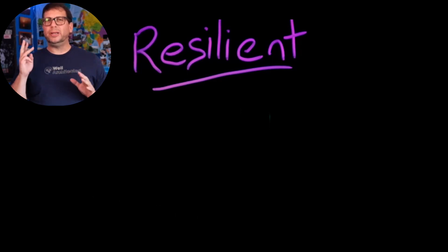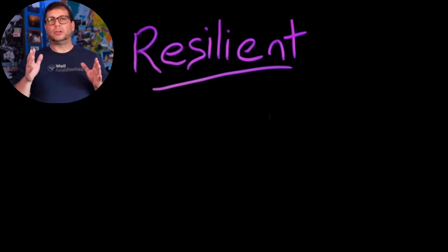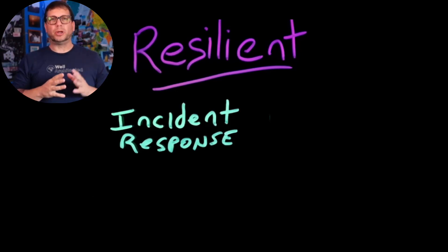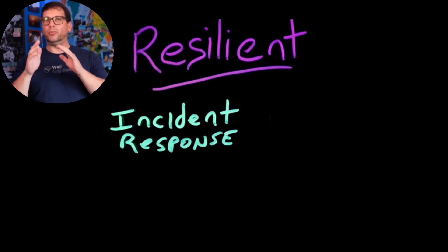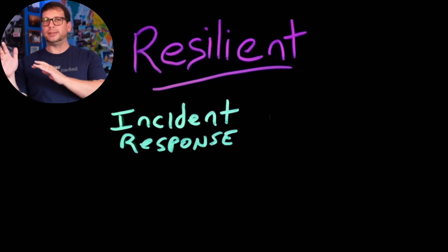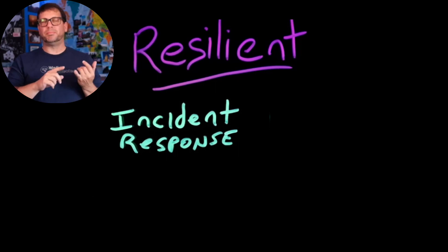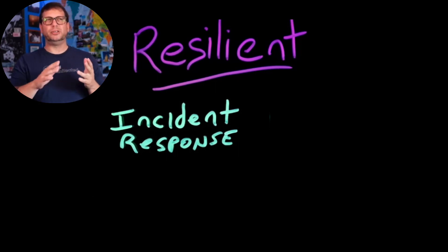There are three topics to consider when making your architecture more resilient. The first is incident response, which involves putting processes, tools, and behaviors in place to address issues in real time and during the period right after an incident occurs — things like prioritizing recovery, triaging issues, and setting up good monitoring and alerting.